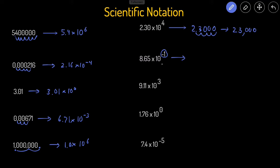This next one has a negative exponent, so the final answer will be less than one and we're going to move our decimal point to the left this time. Starting with 8.65, we move the decimal point one place to the left, so that becomes 0.865. You can see this final number is less than one.